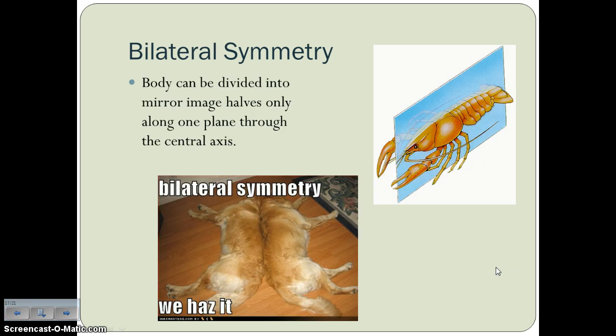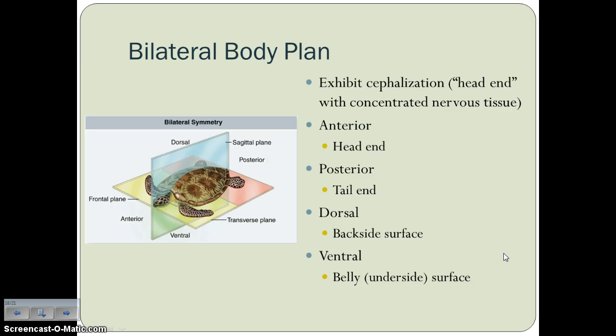Bilateral symmetry is what most advanced animals have — it's when the body can be divided into mirror image halves only along one plane through the central axis. Animals with bilateral symmetry are more complex and exhibit cephalization, which means they have a head end and a non-head end. The head end is where you find concentrated nervous tissue, or in more advanced animals, the brain. The terms you need to know are: anterior (the head end), posterior (the tail end), dorsal (the backside surface), and ventral (the underside or belly surface).